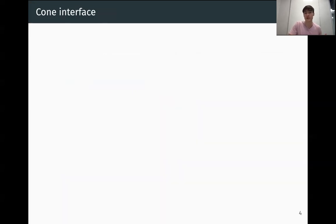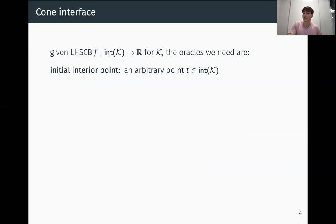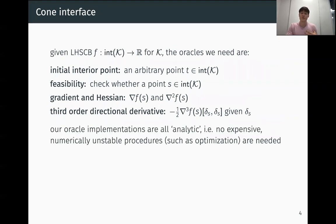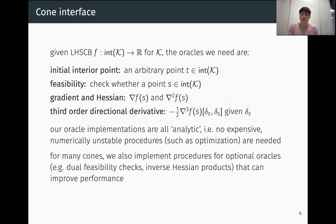Let's discuss Hypatia's current interface. Given an LHSCBF for K, the oracles that we need are an initial interior point, which is just some arbitrary point in the interior of the cone, a feasibility check, which tells us whether a given point is in the interior of the cone, gradient and hessian evaluations for the barrier, and also this new third-order directional derivative oracle given a particular direction. For the predefined cones in Hypatia, our oracle implementations for these oracles are all analytic, meaning there's no expensive numerically unstable procedures such as optimization needed. And also for many cones, we implement procedures for optional oracles such as dual feasibility checks and inverse hessian products that can further improve performance.